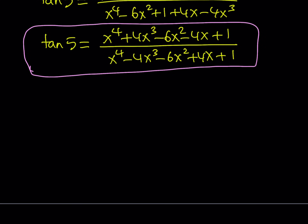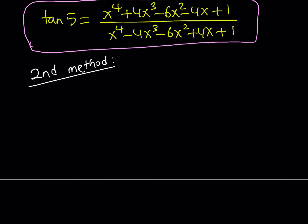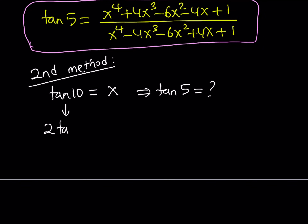So the next thing I'm going to do is look at this from another perspective — that's probably what you were thinking when you first saw this problem. The second method is using the double angle formula in a different way. If you think about the relationship between 10 and 5, five is half of ten. So why not use the double angle formula backwards — you can call it the half angle formula. Tangent 10 can be written as 2 tangent 5 divided by 1 minus tangent squared 5, and we know that equals x. I can find tangent 5 from here.